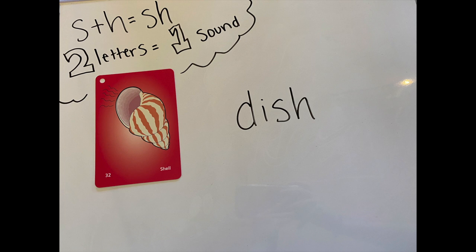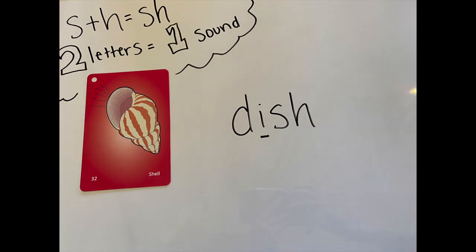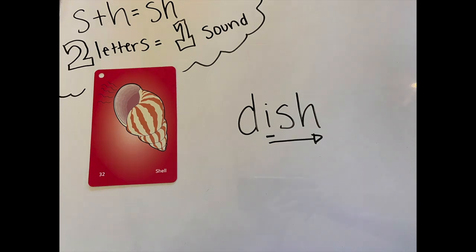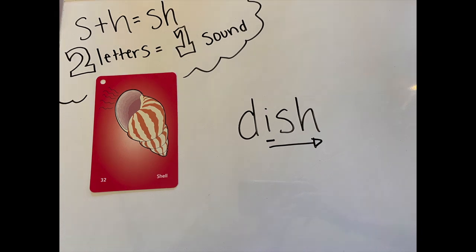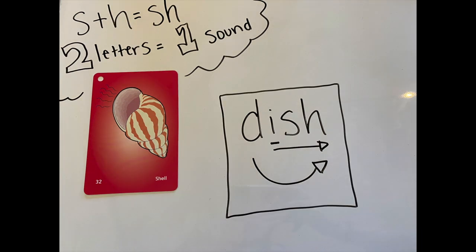Next word. My middle vowel is I. I makes the short I sound. I'm going to go I and slide right. Add the beginning sound: DISH. My word is dish.